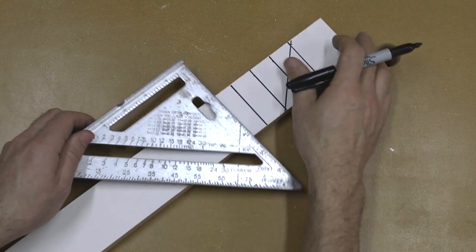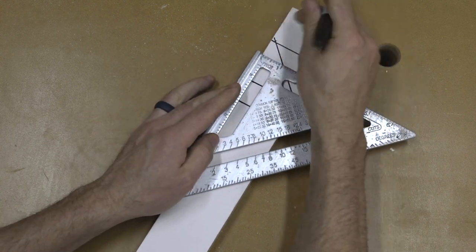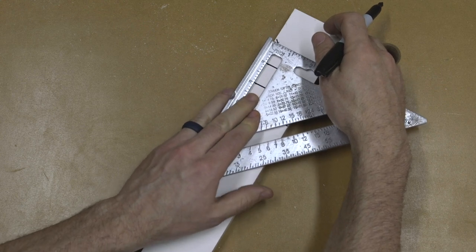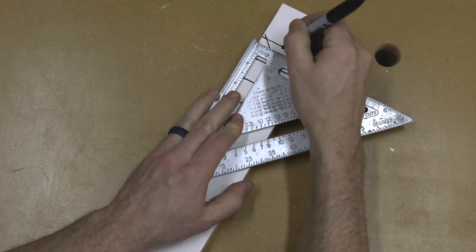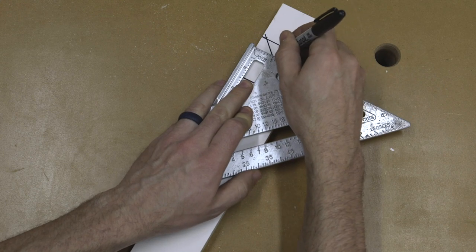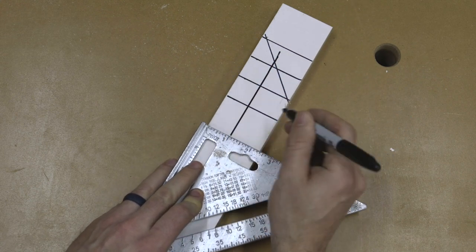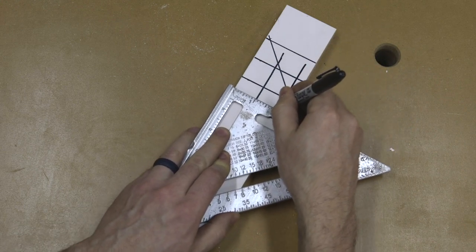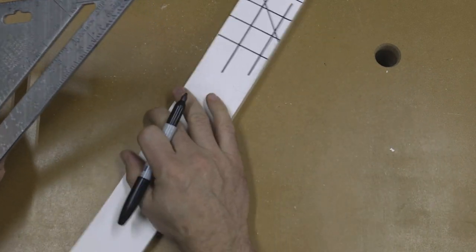And it's also good for drawing long lines. So if I wanted a one-inch line down through here, I would just line this up on the board and then put my marker or pencil down on the one-inch mark and drag this out like this. I could do that at the two-inch mark like this. It's really just universal in what it can do.